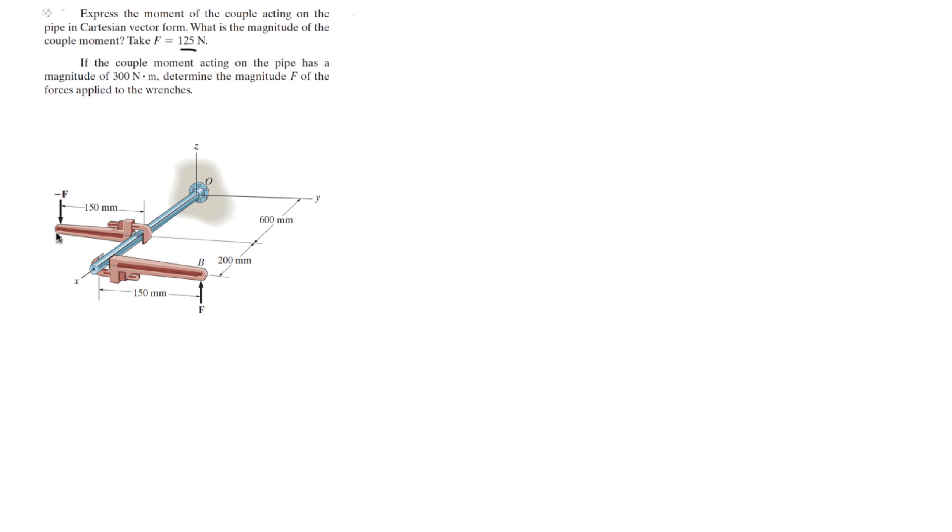So basically we have this point A and this point B that we need to find. So let's find those two points. I have A and I have B and I need to find them. Now A has an X component, a Y component, and a Z component.